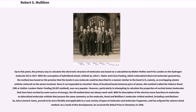Up to this point, the primary way to calculate the electronic structure of molecules was based on a calculation by Walter Heitler and Fritz London on the hydrogen molecule in 1927. With the conception of hybridized atomic orbitals by John C. Slater and Linus Pauling, which rationalized observed molecular geometries, the method was based on the premise that bonds in any molecule could be described as overlapping atomic orbitals centered on the atoms involved. Since it corresponded to chemists' ideas of localized bonds between pairs of atoms, this Heitler-London-Slater-Pauling method was very popular. However, particularly in attempting to calculate the properties of excited states, the VB method does not always work well. With its description of electron wave functions in molecules as delocalized molecular orbitals possessing the same symmetry as the molecule, the Hund-Mulligan molecular orbital method, including contributions by John Lennard-Jones, proved to be more flexible and applicable to a vast variety of types of molecules and molecular fragments, and has eclipsed the valence bond method.